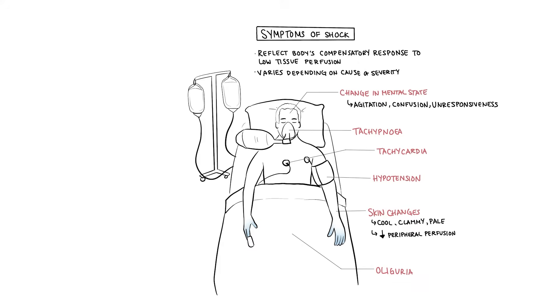There are some important definitions we need to be aware of. Hypotension is defined as low blood pressure, typically less than 90 over 60 mmHg, some say less than 100. Tachycardia, which is rapid heart rate, greater than 100 beats per minute. Tachypnea, rapid breathing, greater than 25 breaths per minute. And oliguria, which is low urine output, less than 400 mLs in 24 hours.